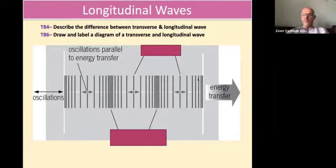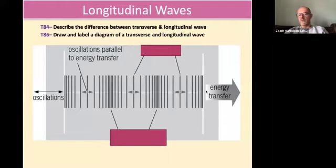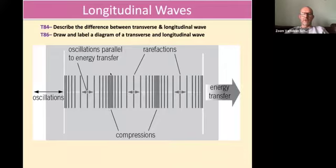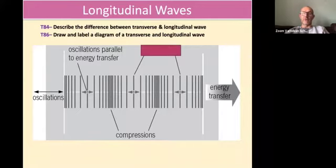The second type is a longitudinal wave — it's harder to draw but you need to recognize one. The vibrations are backwards and forwards along the direction of travel, not up and down. The only example you need to know is a sound wave: air particles bump into each other moving the sound from a mouth to an ear. Where particles are close together, that's called a compression; where they're pulled apart, that's called a rarefaction.